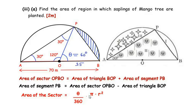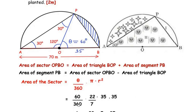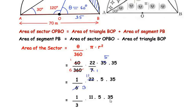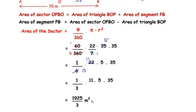Plugging in the values: (60/360) × (22/7) × 35². Simplifying: 60 divides 360 giving 1/6, and 7 divides 35 giving 5. This gives (1/6) × 22 × 5 × 35. Further simplifying 6 and 22 by dividing by 2: (1/3) × 11 × 5 × 35. Multiplying the numerator terms gives 1925/3 square meters.